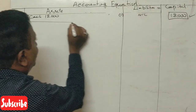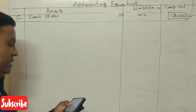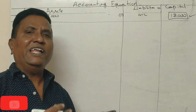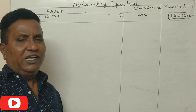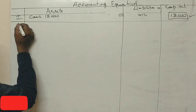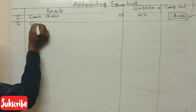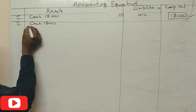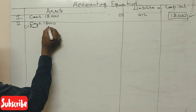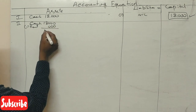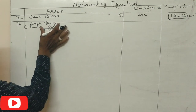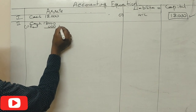Second transaction: paid rent in advance. When we pay advance rent, cash decreases. Cash was ₹18,000, we pay ₹400 advance rent, so cash becomes ₹17,600.